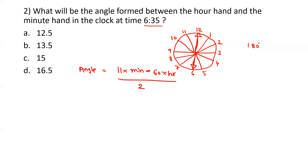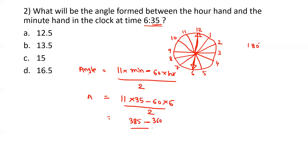Simplifying: 11 × 35 = 385, and 6 × 60 = 360. So we get |385 − 360| / 2 = 25 / 2 = 12.5 degrees. This is the angle formed between the hour hand and minute hand when the time is 6:35. So option A, 12.5 degrees, is the right answer.